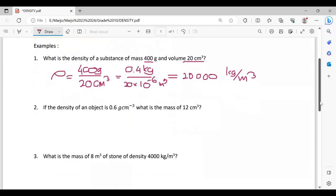Next, number two: If the density of an object is 0.6 gram over centimeter cube and the volume is 12 centimeter cube, we're going to calculate density. What is the mass? Given density 0.6 gram over centimeter cube and volume 12 centimeters cube, so we're gonna find mass.